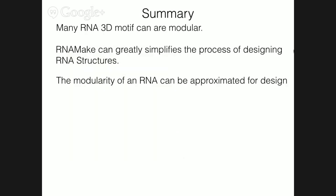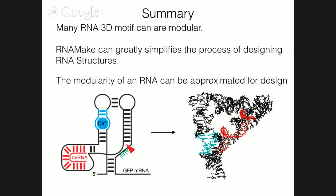Looking on the other side we have P4-P6 J5A, which on the other hand has only one example of this motif in the PDB, and it's most likely a hinge. Under functional constraints it might be unable to form this modular structure, since its job is not to be a stable bend but might be in two separate conformations, which might contribute negatively to its stability. So to quickly summarize: many RNA 3D motifs can be modular; RNA Make greatly simplifies the process of designing RNA structures; and I think I've demonstrated that the modularity of RNA can be approximated for design using this scale.